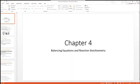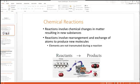Welcome to the chapter 4 overview video where we're going to cover balancing equations and reaction stoichiometry. A basic chemical reaction has two parts: the reactants which react to produce products.